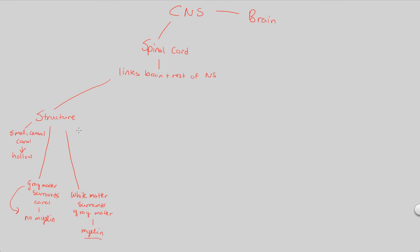In addition to this gray matter and white matter structure, the spinal cord also contains cerebrospinal fluid, or CSF. The CSF is a very important fluid of the nervous system — cerebrospinal fluid — that provides hormones to the nervous system, specifically the spinal cord. It also provides nutrients, and it takes away metabolic waste. So anything that the spinal cord needs to get rid of will be mixed with the cerebrospinal fluid and filtered out. It provides hormones, nutrients, and takes away waste.